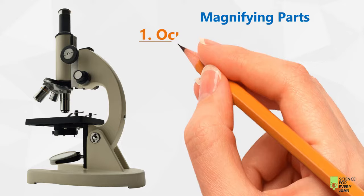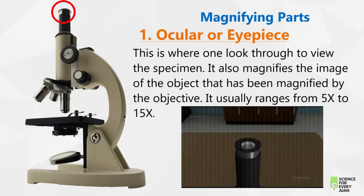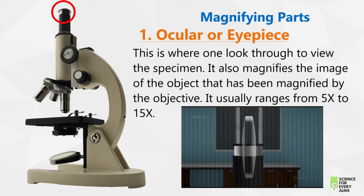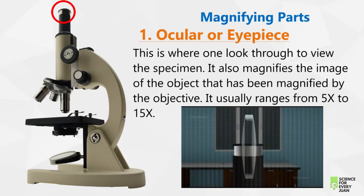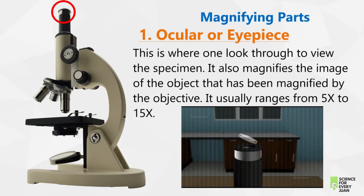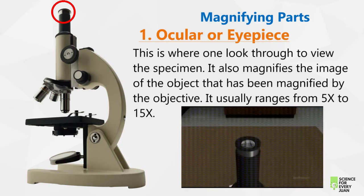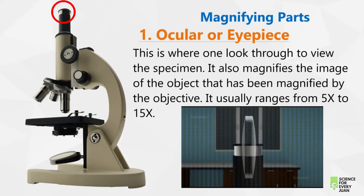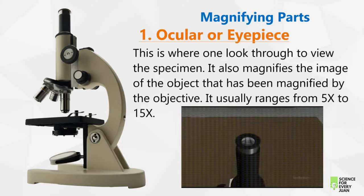Now let us identify the magnifying parts of the microscope. The first magnifying part is the ocular or the eyepiece. This is the part where one looks through to view the specimen. It also magnifies the image of the object that has been magnified by the objective, and it usually ranges from 5x to 15x.